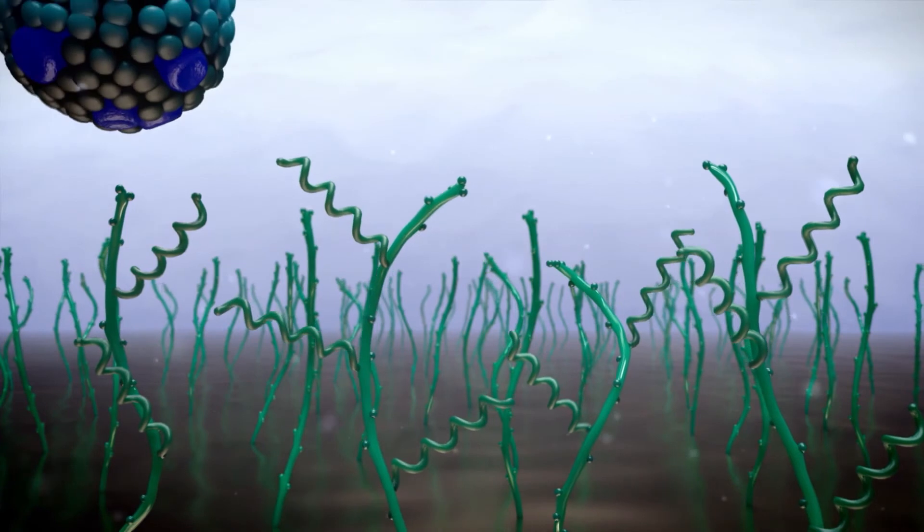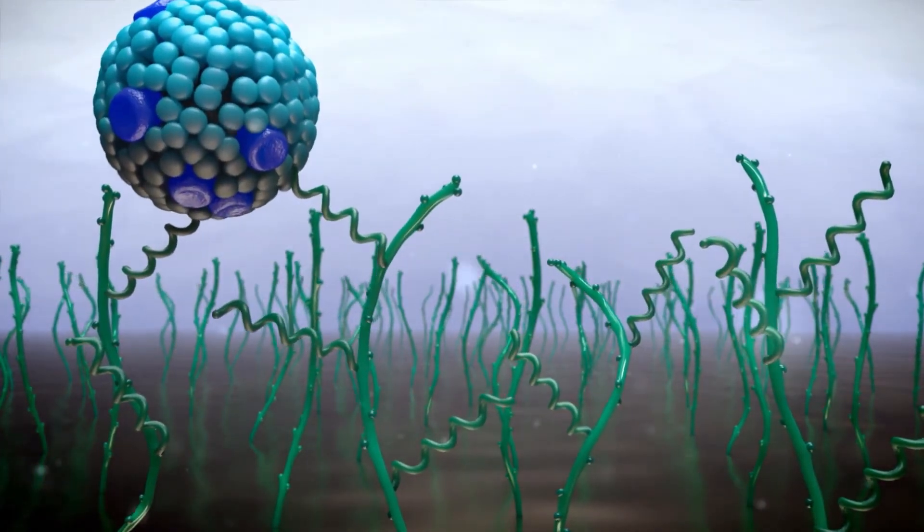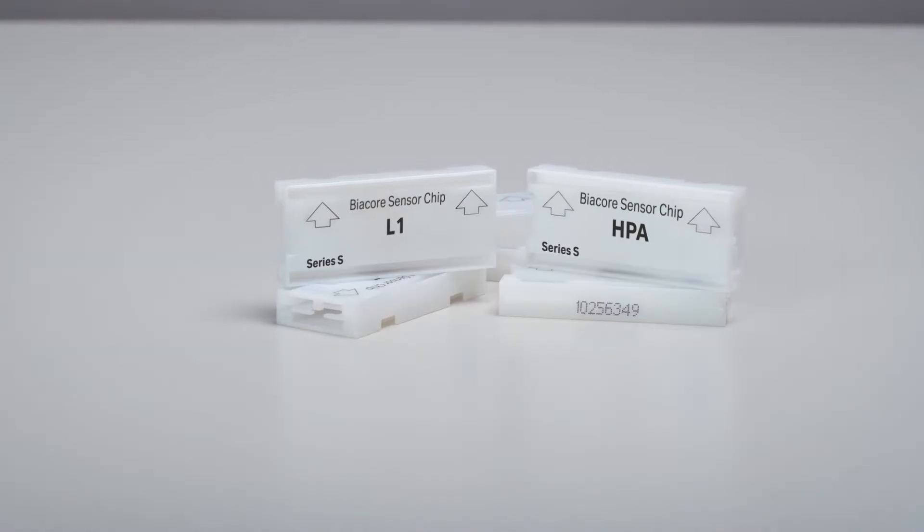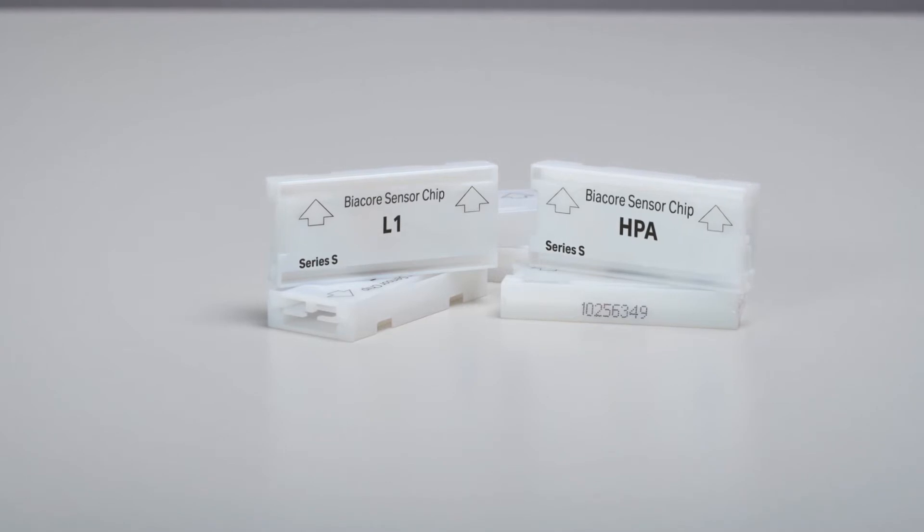Hydrophobic molecules like lipids can bind to the hydrophobic groups introduced on the surface. Alternatively, the surface of sensor chip HPA is already hydrophobic and can be used directly.